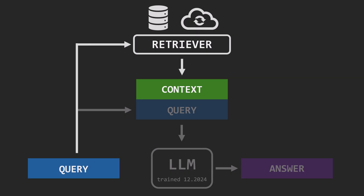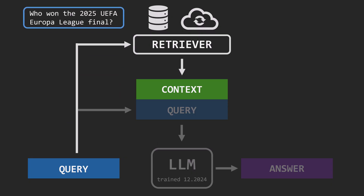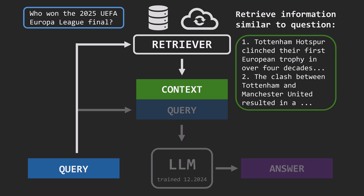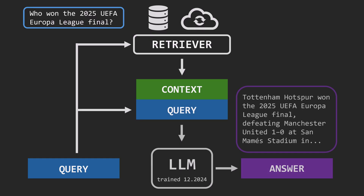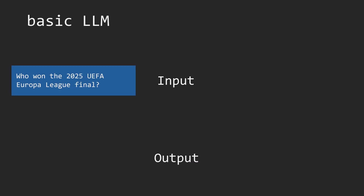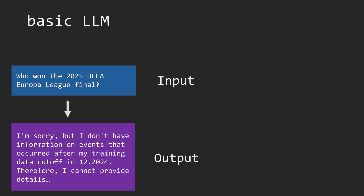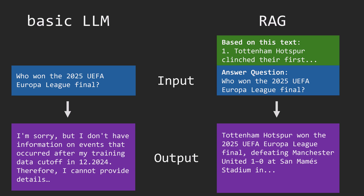Let's look at RAG architecture with a practical example. The question goes to the retriever, which finds the most relevant small chunks of text called passages. These passages are added to the query, and this augmented input is passed to the language model to generate the answer. Comparing the two: in a basic LLM, the output comes solely from its internal memory. In RAG, we add context from external sources to the query, enabling the model to produce more accurate, up-to-date answers — and in practice, it proves to be very effective.